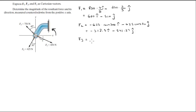Now F3 equals negative 750 cosine of 45 degrees, because this angle is 45 degrees, in the i direction